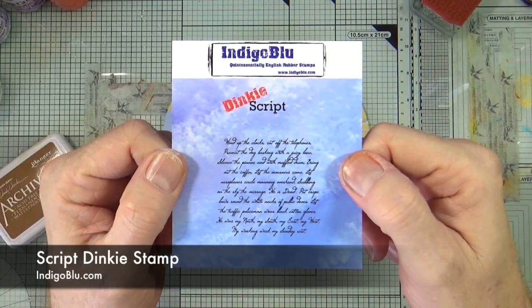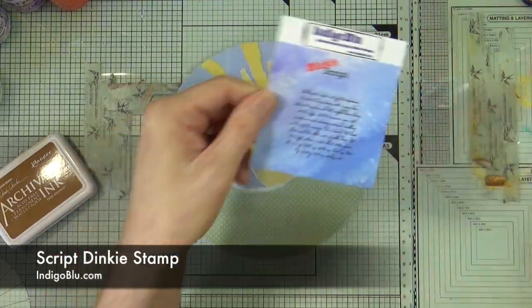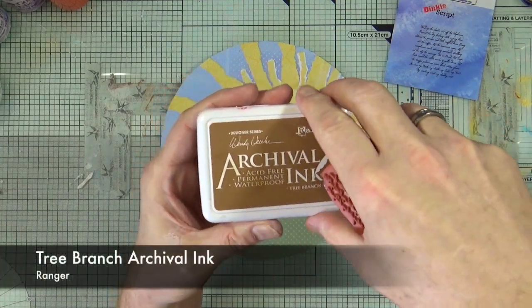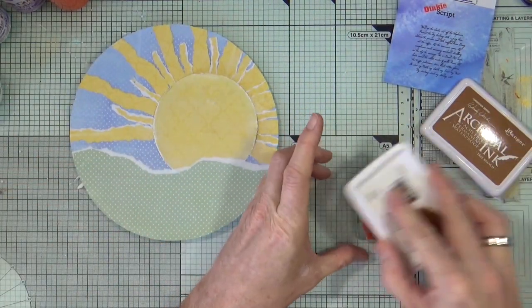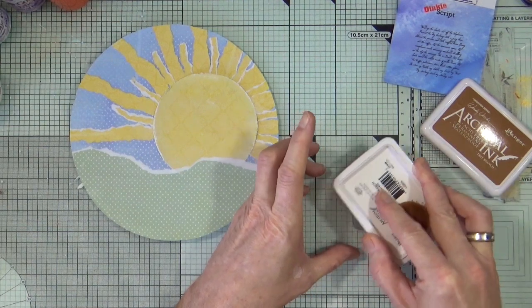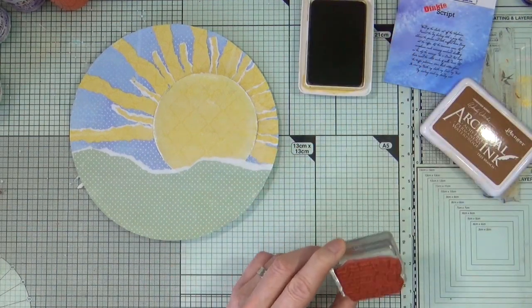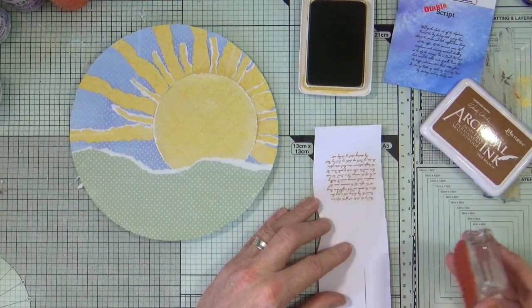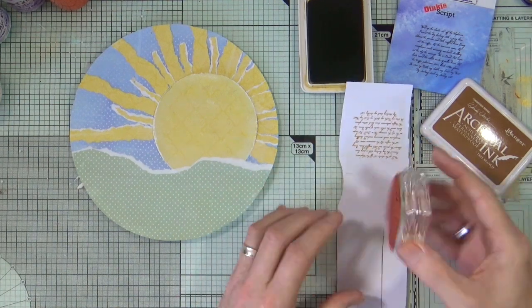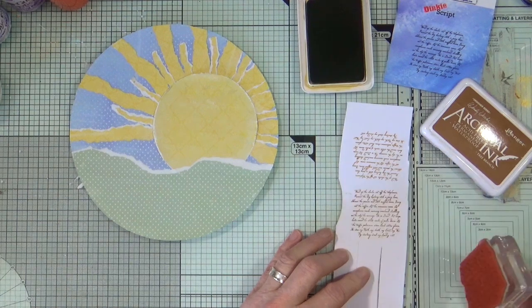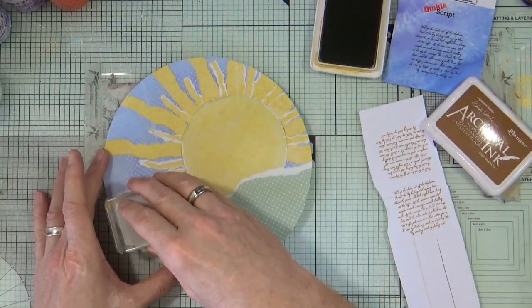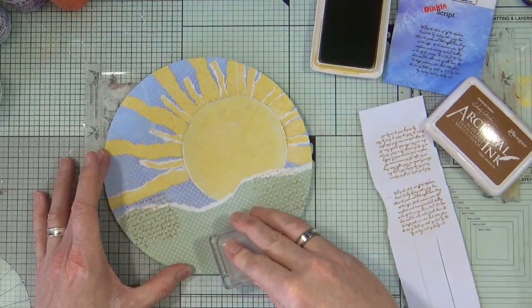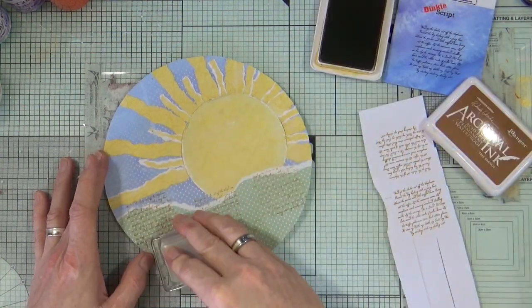I want to add a little bit of texture, so for this I'm using the Script Dinky stamp from Indigo, this is a brand new one. I'm just going to ink it up using the Tree Branch archival ink. I'm just going to stamp that around the bottom section of the page. I just want to make sure that I've got it the right way up first so I don't want to be stamping down and putting the text upside down, because I know people will probably want to try and read it. But this is one of those stamps where you can actually read what the text says. So I've only stamped around the lower portion of the page.